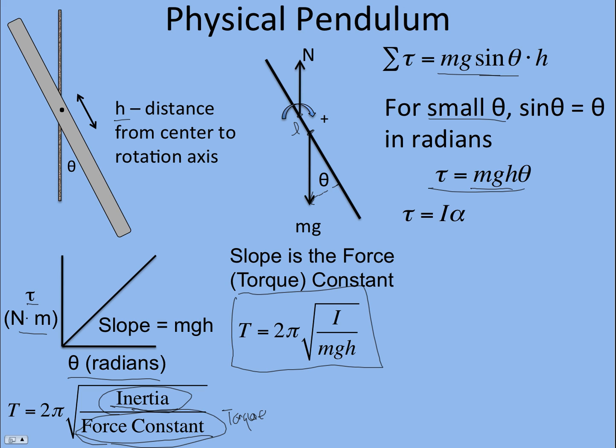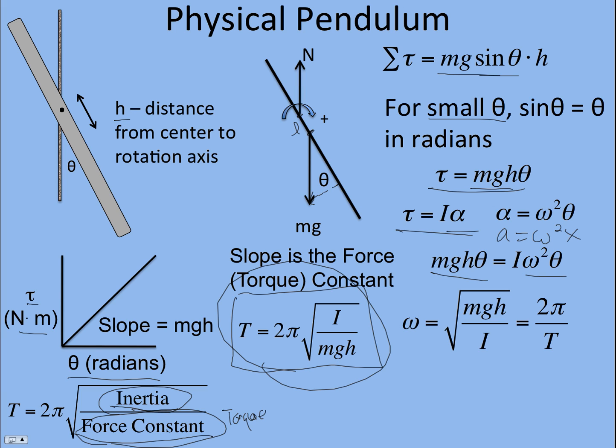There's another way to do it. Sum of the torque equals Iα, and α is ω²θ, just like a is ω²x. So I can replace α with ω²θ, and I can replace torque with mghθ that we got from up here. So I can solve for ω, and I get √(mgh/I). And ω is also 2π over the period, so if you solve that for period, you get the same thing as over here.